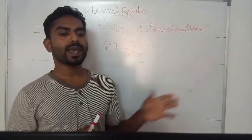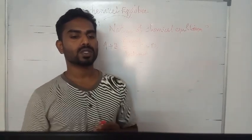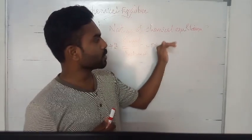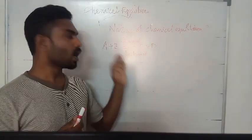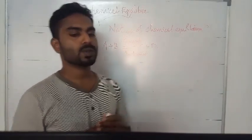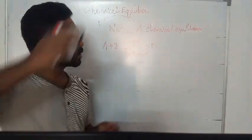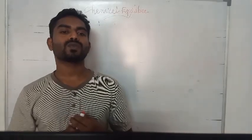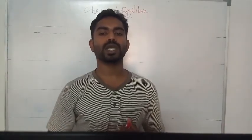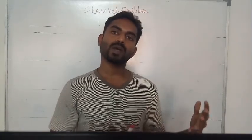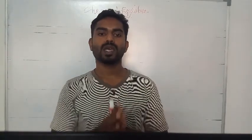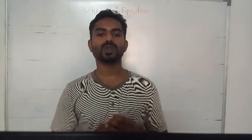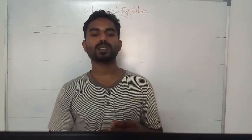After some time, the two rates become equal, and provided the experimental conditions are not altered, no further change occurs in the concentration of reactants and products. The rate of the forward reaction equals the rate of the backward reaction. Chemical equilibrium is the stage of a reversible reaction at which both forward and backward reactions take place with equal rate without change in the composition of the system.